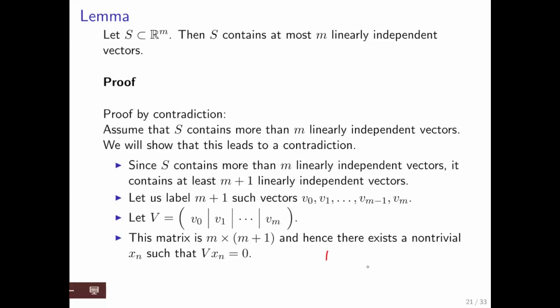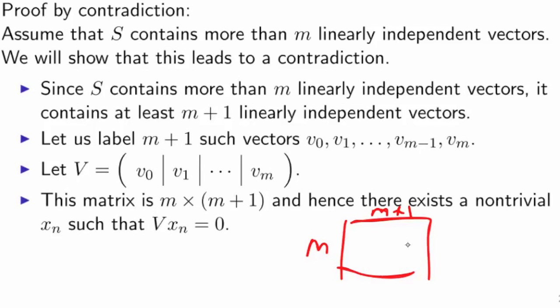We know that that matrix has m rows and m plus 1 columns. But we've seen several times now that if you have fewer equations than you have unknowns, then we can find a non-trivial vector, a vector that is not the zero vector, such that V times x_n is equal to zero. But that contradicts the fact that these vectors are linearly independent.